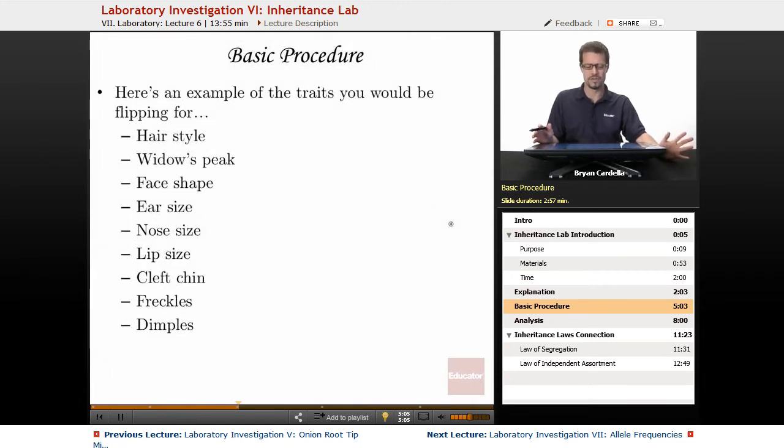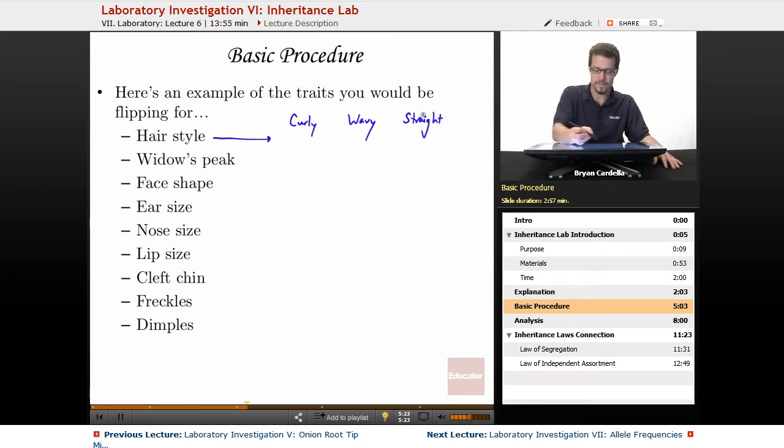The basic procedure. Here's an example of the traits that you're going to be flipping for. For hairstyle: there's curly as a phenotype, wavy as a phenotype, and straight as a phenotype. The genotypes look like this. If you both flip heads, curly hair. If you each flip the opposites, wavy hair. If you both flip tails, straight hair. That's an example where you actually have a one to two to one ratio of phenotypes in addition to genotypes.